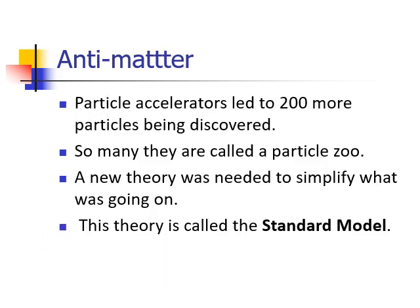Using particle accelerators led scientists to find more than 200 different particles — so many they called it a particle zoo. Because there were so many, it was really confusing, and a simpler model was needed to sort it all out. That model, which we will learn about in particular for this course, is called the Standard Model.